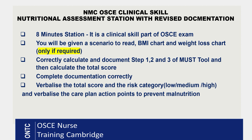It's a half-written, half-verbal station. You will be given a written scenario to read, a BMI chart (body mass index chart), and a weight loss chart — though you may not always be given the weight loss chart. You need to correctly calculate Step 1 (body mass index), Step 2 (weight loss score), and Step 3 (acute disease effect). Then you need to complete the documentation correctly and verbalize your findings to your examiner.